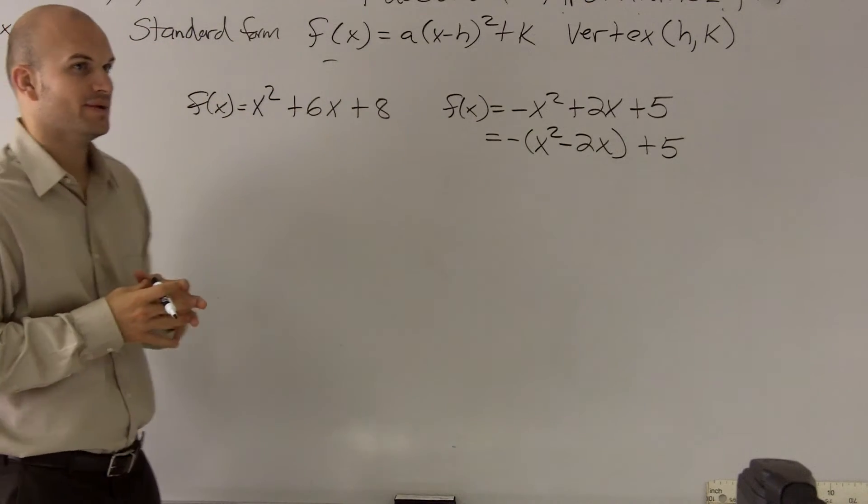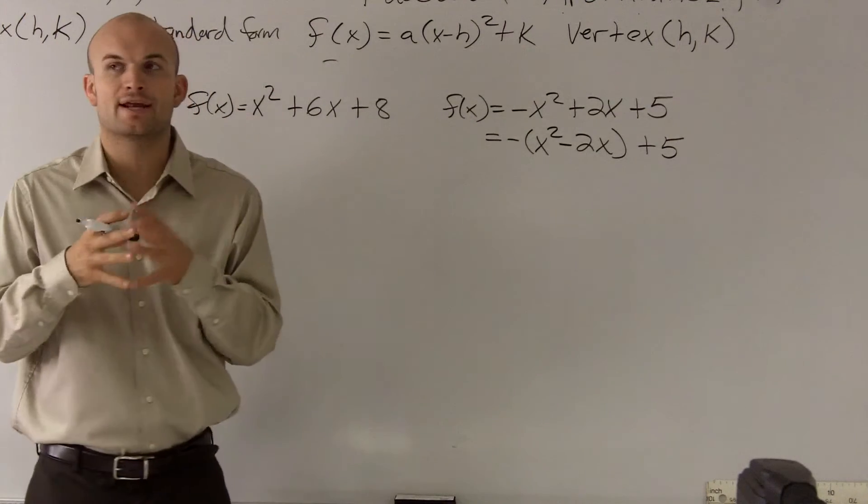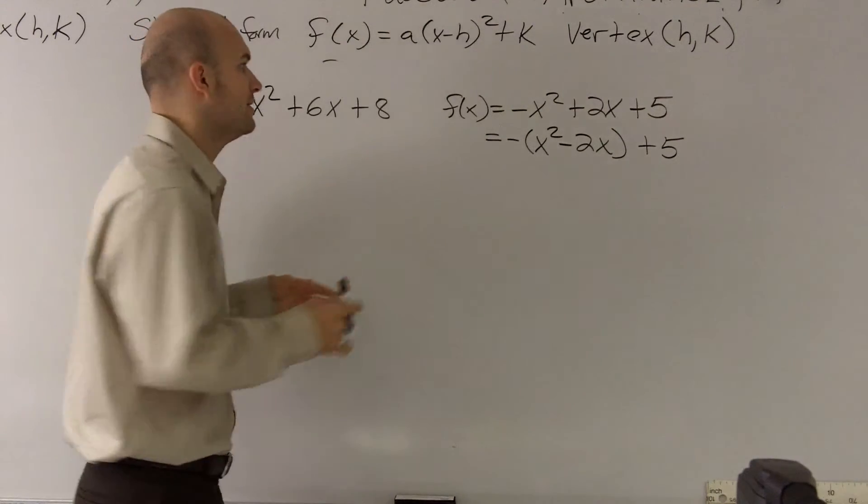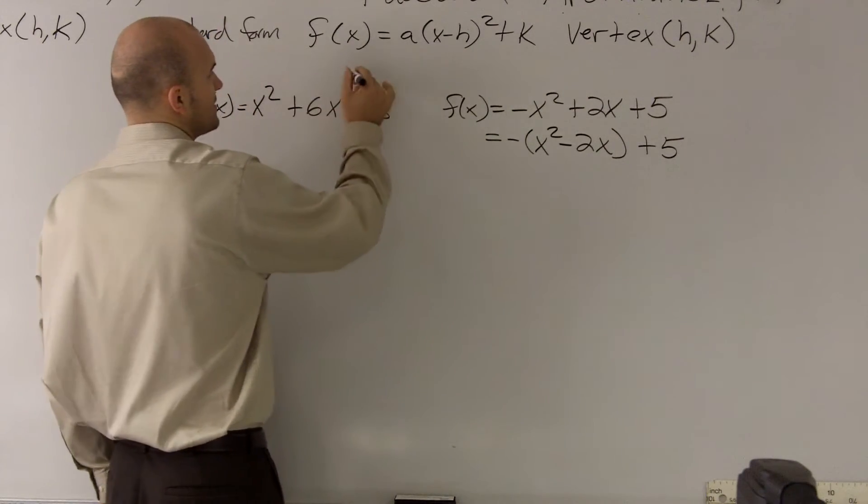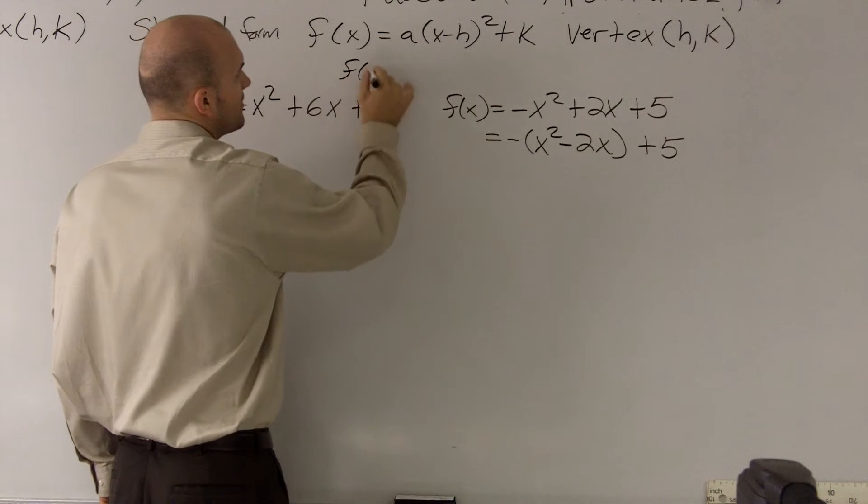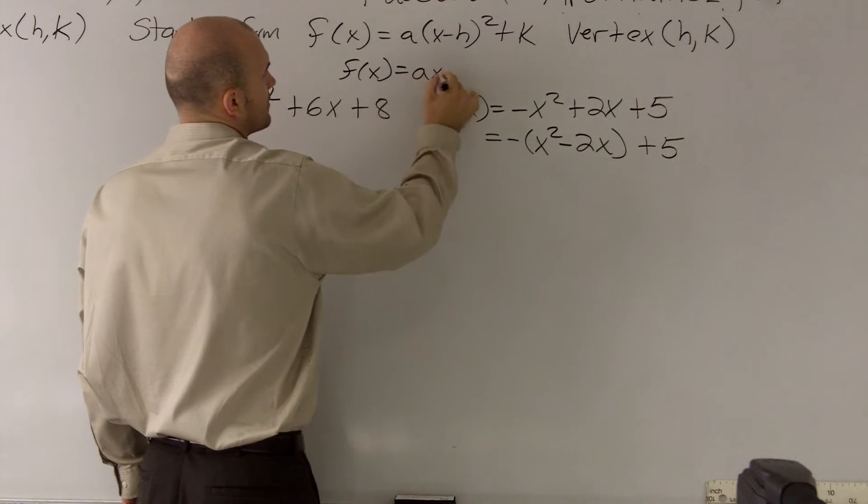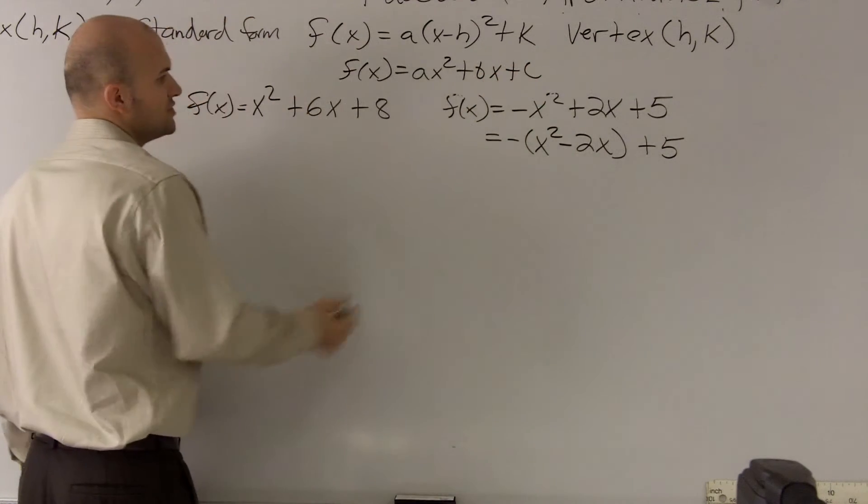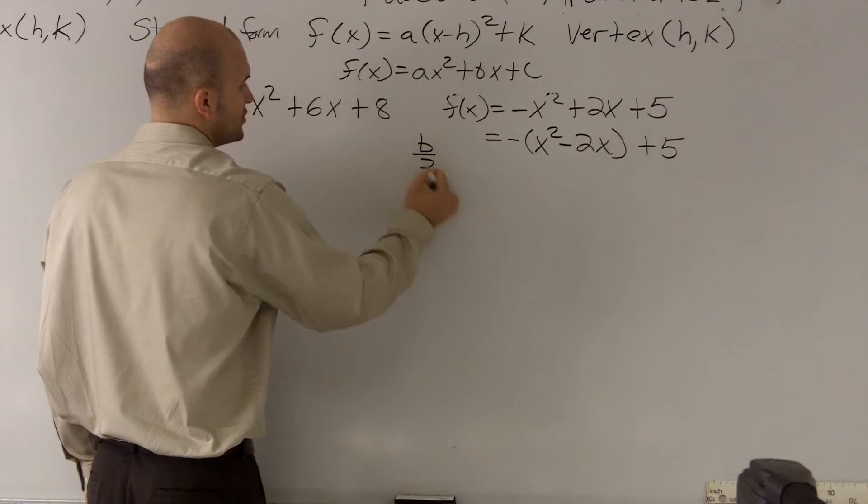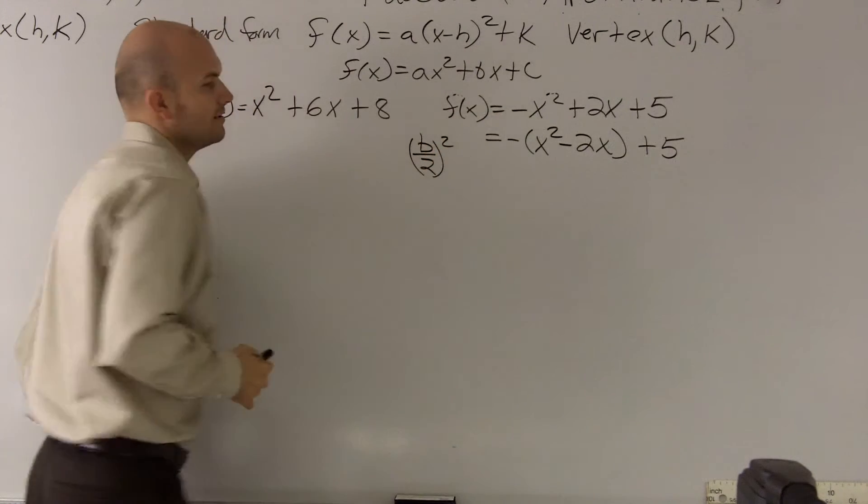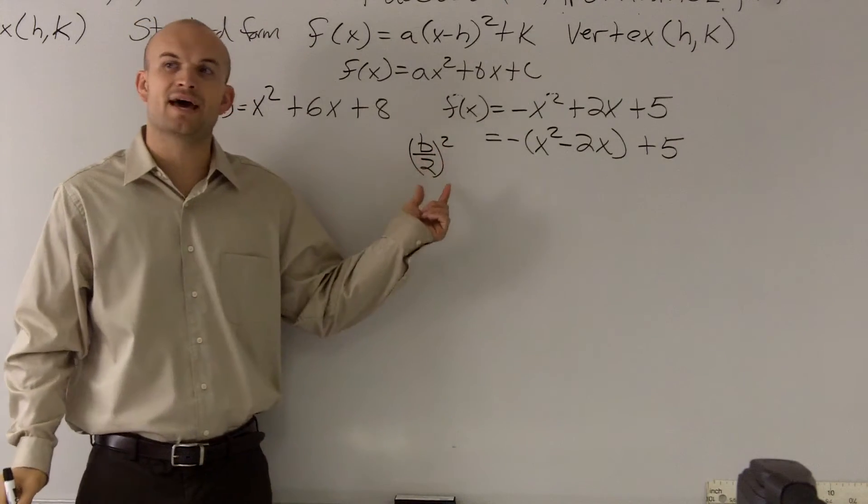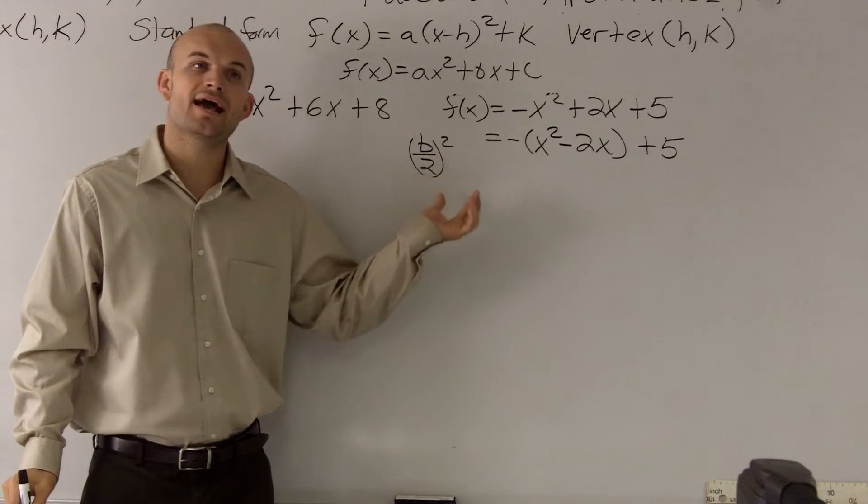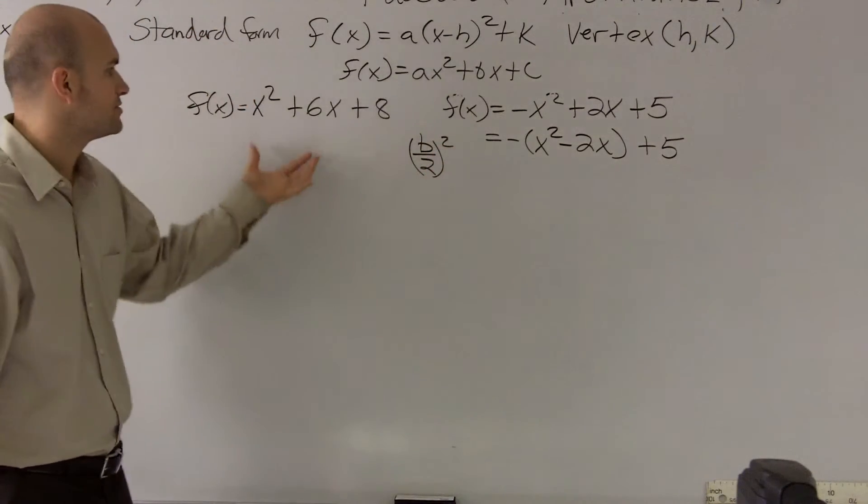The next thing we need to do is we need to figure out how we're going to get our perfect square. Well, there's a way we can get a perfect square every single time. First of all, we need to remember what a quadratic equation looks like. What we need to do is we need to take b over 2 and square it, and then we're going to add that to our function.